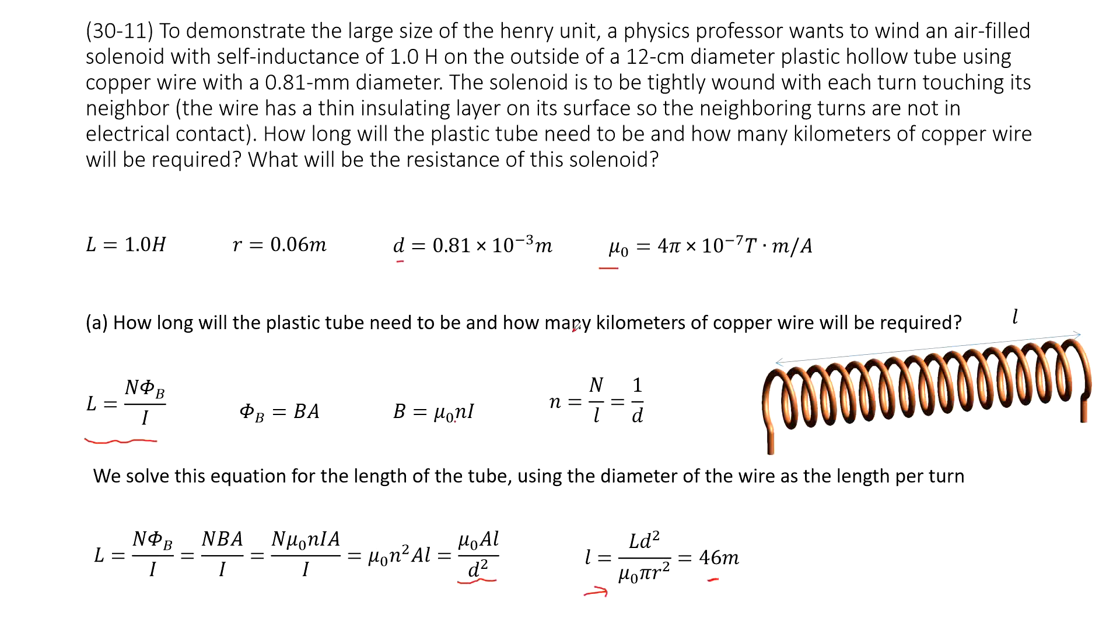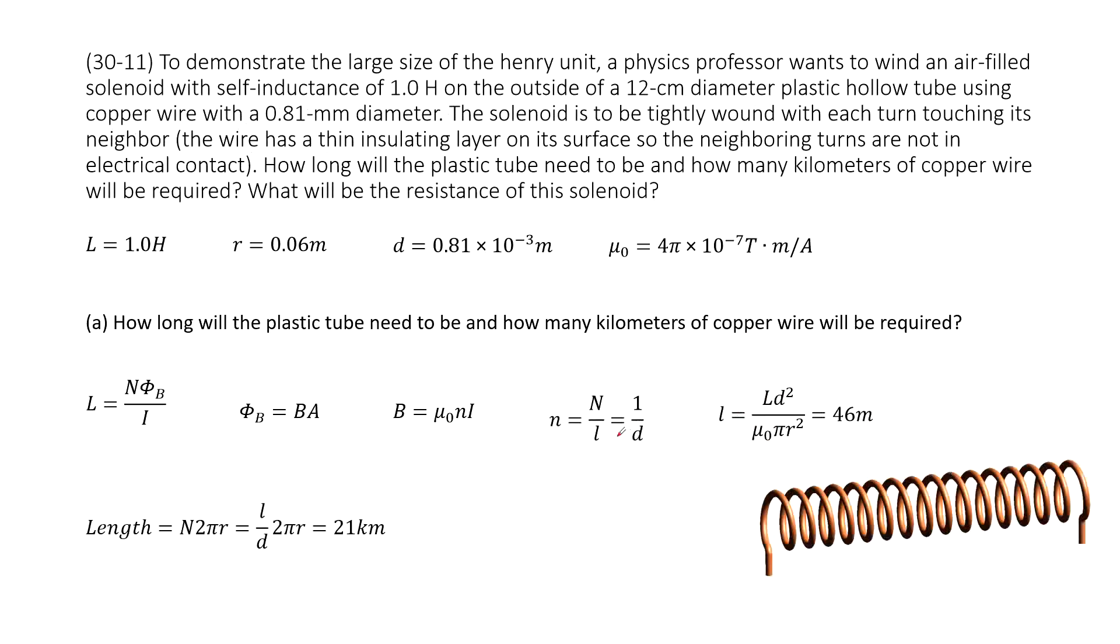Next, how many kilometers for the copper wire? We need to find the length for this copper wire. This length for the wire should be how many turns on this solenoid times, for each turn, the length is 2πR. The number of turns is N, which you can write as L over d. Input all the given quantities, the answer is there.